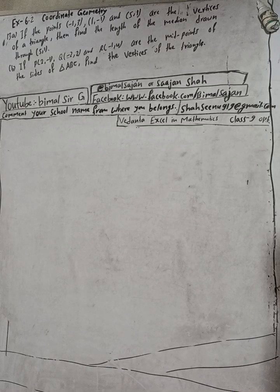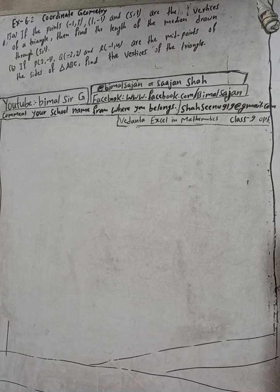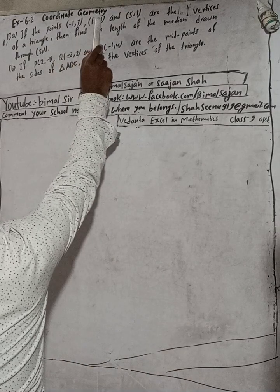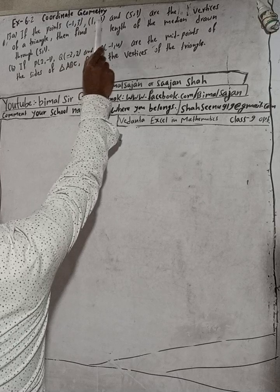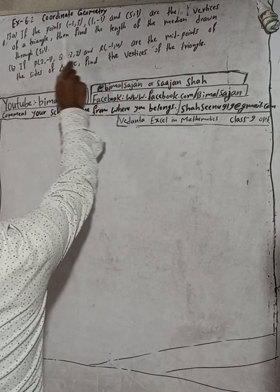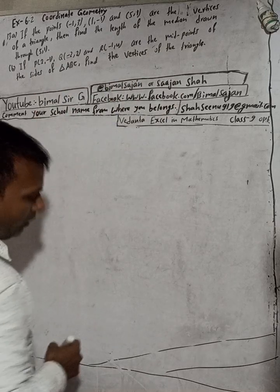Hi class 9 and 10 students, welcome back to Vimal Saharji's YouTube channel. This is question number 13a, exercise 6.2, coordinate geometry, class 9 optional mathematics. If the points (-1, 3), (1, -1), and (5, 1) are the vertices of a triangle, then find the length of the median drawn through (5, 1).